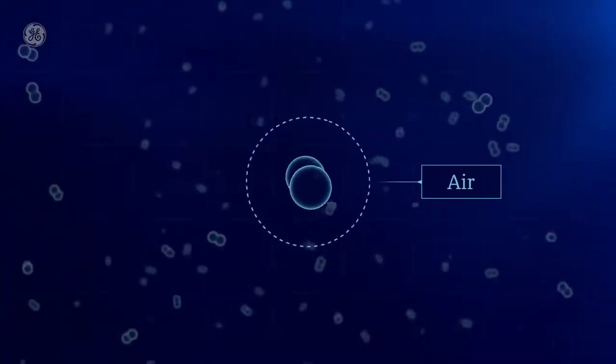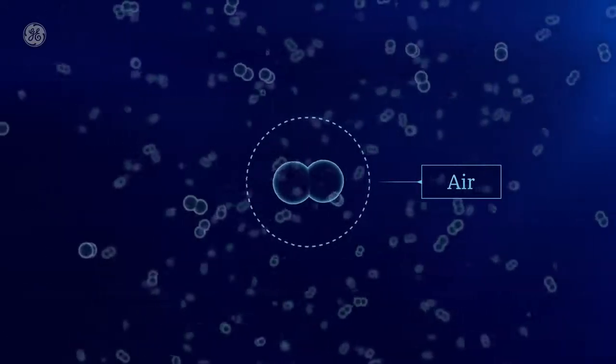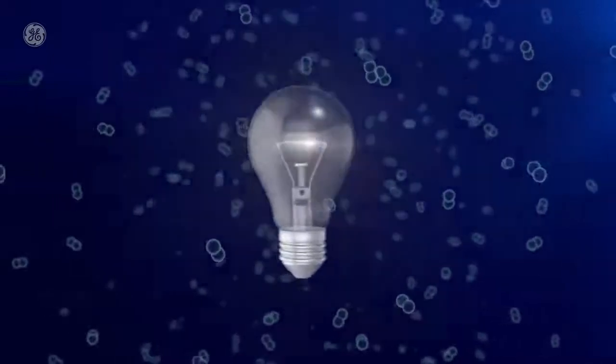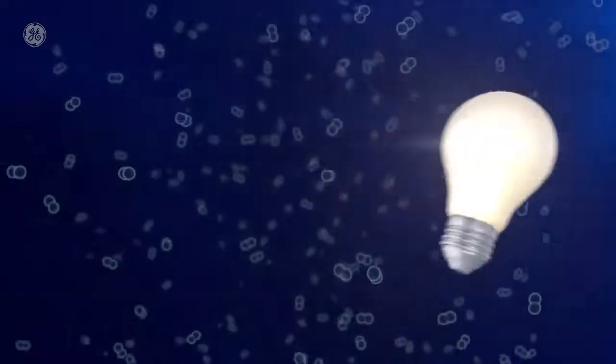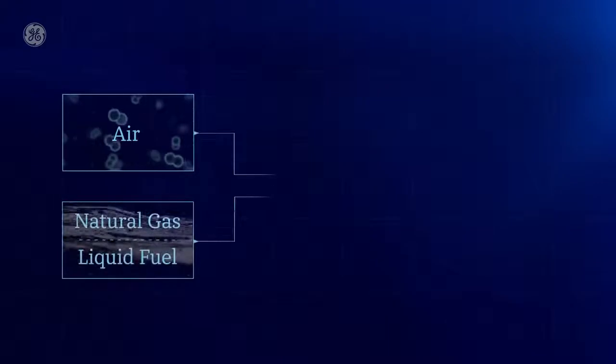Air—a lot of gaseous molecules floating all around us. It's great for breathing, and it turns out it's great for getting lights turned on. That's because air, along with abundant natural gas or other fuels, are the ingredients that combine in a gas turbine.